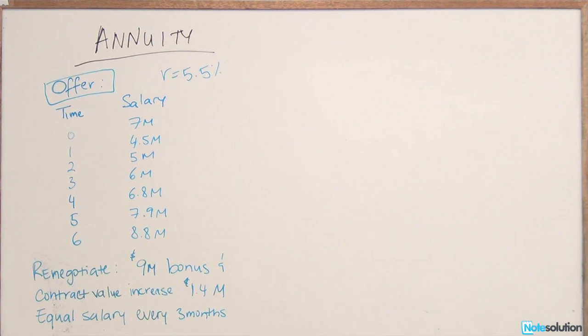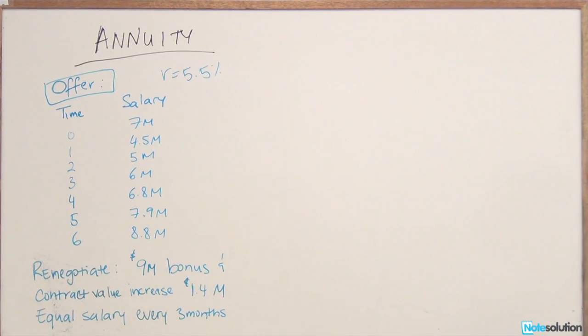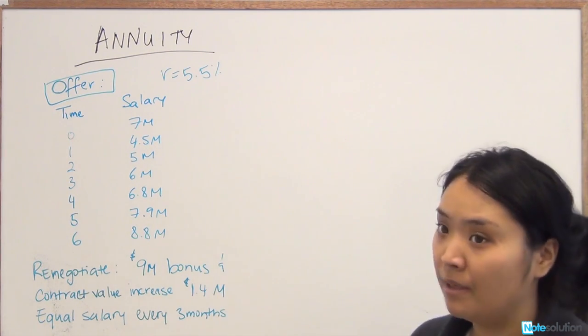So because this is a difficult question, there are a few steps. First of all, we know that the rate of return is 5.5% compounded daily, but we have our salary cash flows on a yearly basis. So the two figures don't really match, so we need to find the interest rate on a yearly basis.